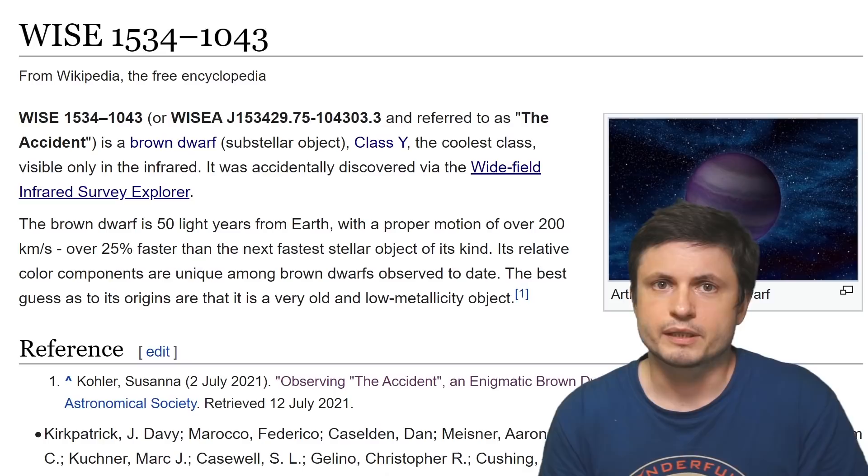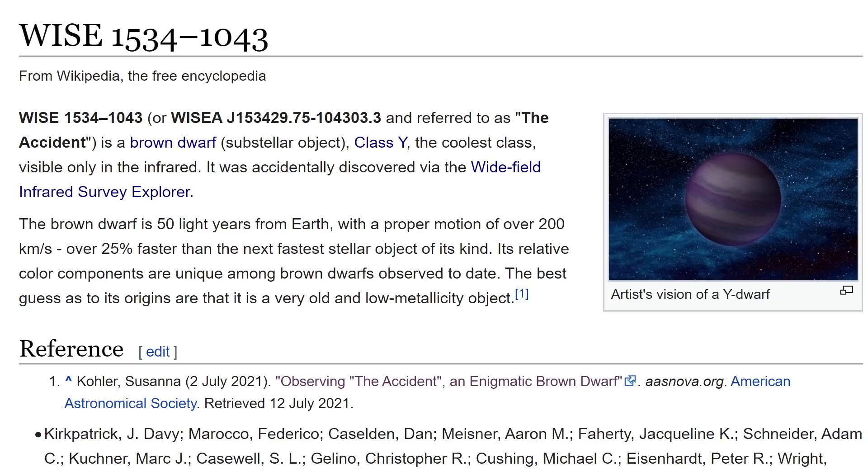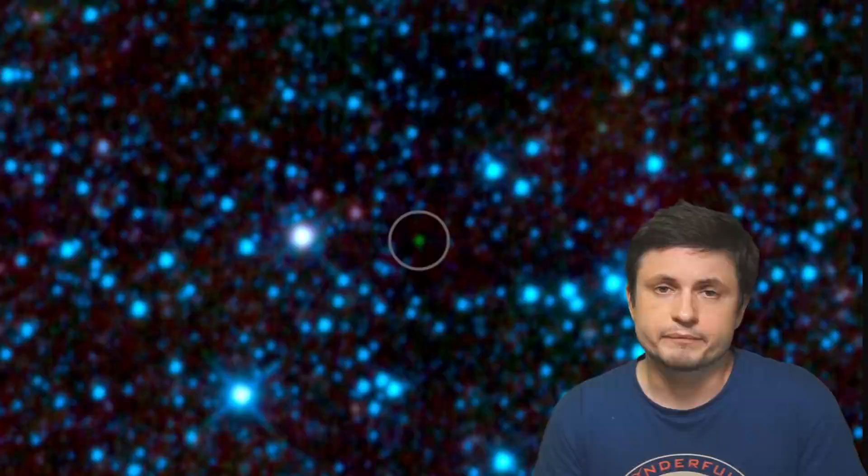And because it was a somewhat strange discovery and also because it was discovered completely by accident, since then this unusual detection has been referred to as the accident, with a more official name being WISE 1534-1043. And although it initially appeared as some sort of a fast-moving brown dwarf-like object, with further investigation, even more mysteries unraveled as the scientists looked at the data.